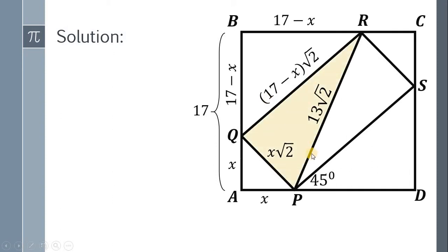Now consider this right triangle. Since we have a right triangle, we can use Pythagorean theorem. So we have (X√2)² plus ((17 - X)√2)² equals (13√2)². Simplify and we get 2X² plus 2(289 - 34X + X²) equals 338.